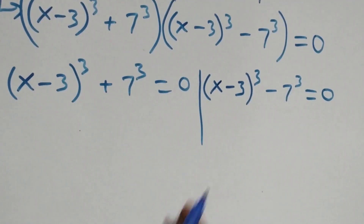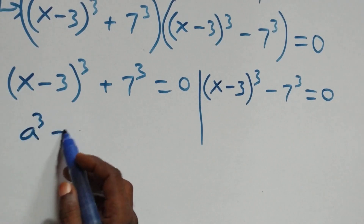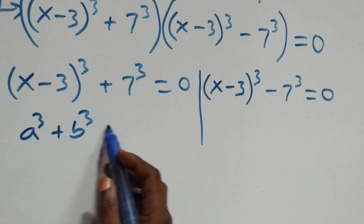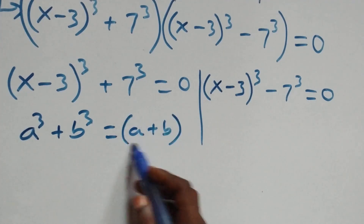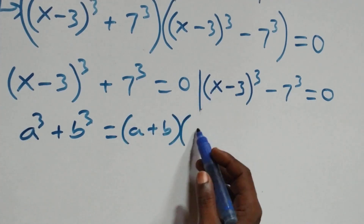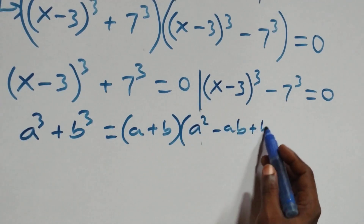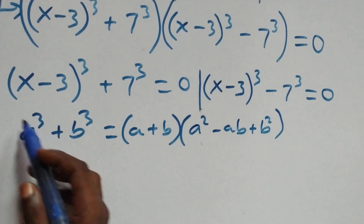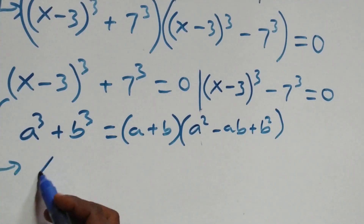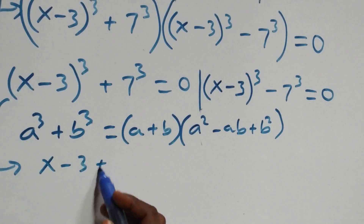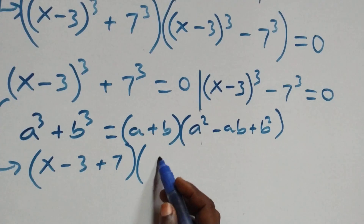Solving from the first case, this follows when we have a raised to power 3 plus b raised to power 3, which is the same thing as a plus b in brackets, times a squared minus ab plus b squared. That is, this becomes x minus 3 plus 7 in brackets, times the expansion.